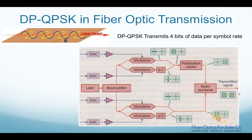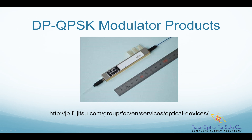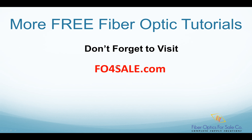This picture shows a 100 Gbps DP-QPSK fiber optic modulator product from Fujitsu Optical Components. It has many pins for the four binary data streams and some DC bias control pins. You can visit the referenced website for more details. Visit foforsale.com for more free fiber optic tutorials. I will see you in the next video.